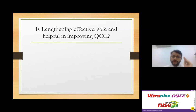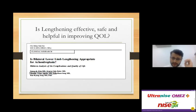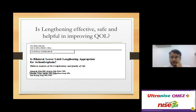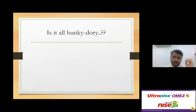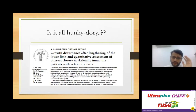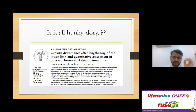Is limb lengthening effective, safe, and helpful in improving quality of life? Our paper showed it does improve quality of life. However, whether to perform it is the individual's and family's choice, influenced by cultural traditions. In the US, lengthening in achondroplasia is generally not encouraged. In Southeast Asian countries, there is great acceptance. In India, the verdict is still out. A complication we described is growth disturbance after very early lengthening, which is why we recommend deferring until about 11 years of age — though this remains controversial.